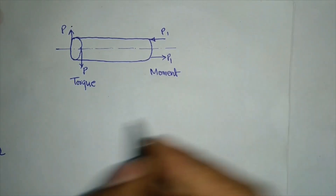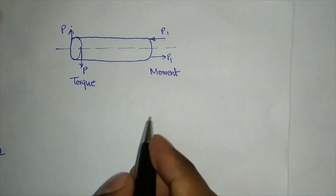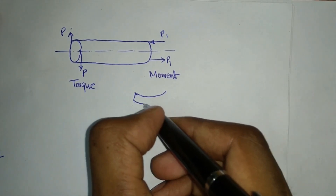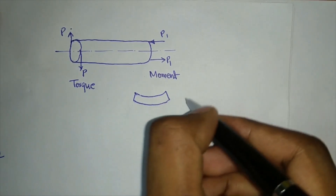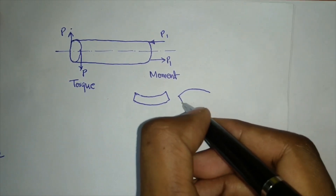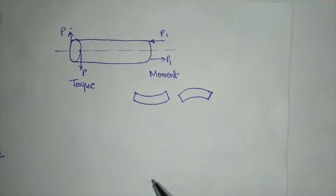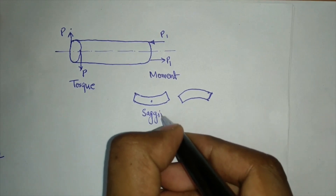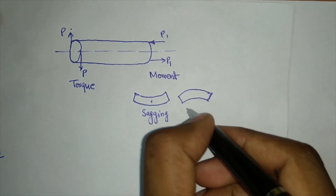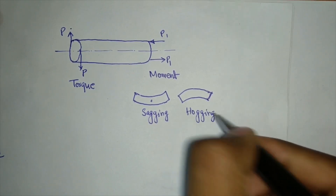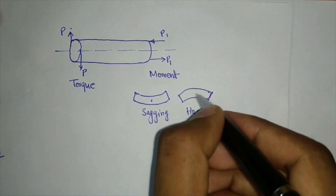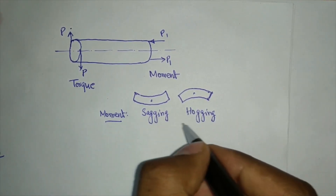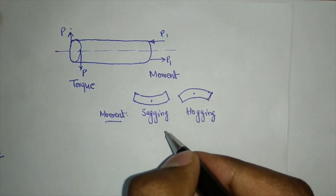Whenever there is bending due to moment, it can occur in two directions. The beam can bend downward — this is called sagging — or it can rise upward, which is called hogging. So there are two types of bending moments: a sagging moment and a hogging moment.